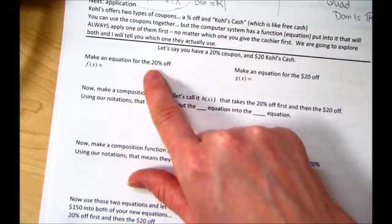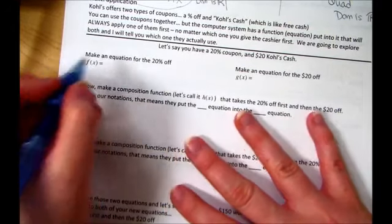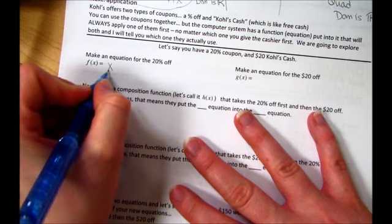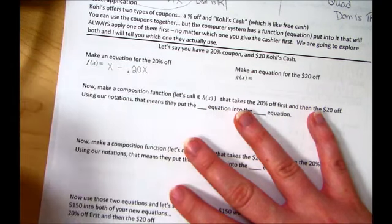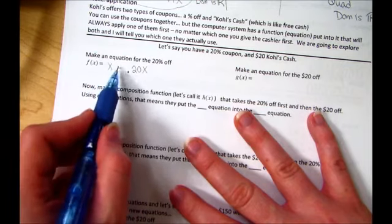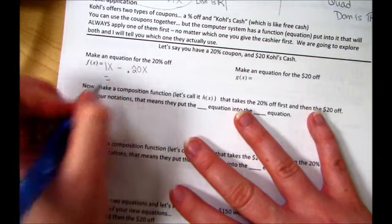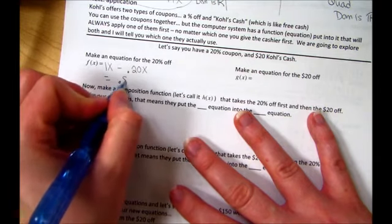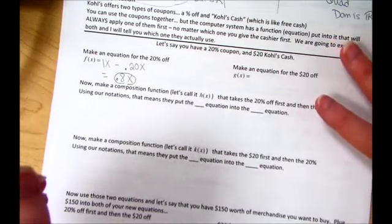Let's make an equation for the 20% off. So we'll just call that F of X. So if we have a total bill of X, we have to minus the 0.20 of the final bill. That's how you take a percentage off. You take total minus 20% of the total. Well, simplified, this is 1 minus 0.2, which is really just 0.8X. So this is for the 20% off coupon.